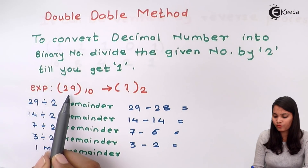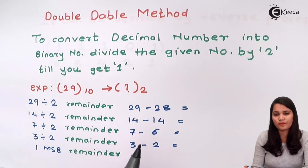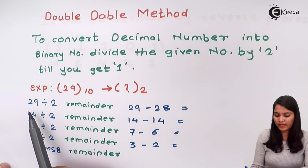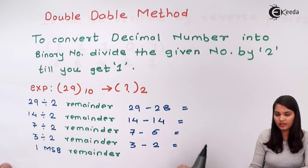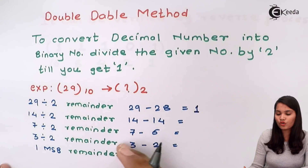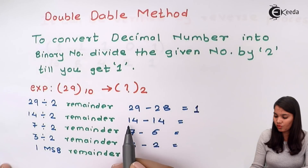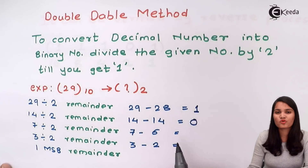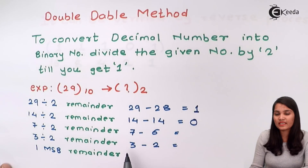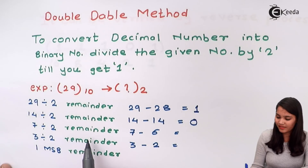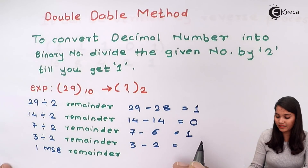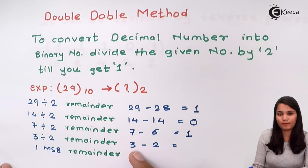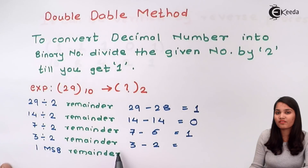We have taken an example of 29. We have to convert the decimal number 29 into the binary number. We just have to divide the number until we get the quotient as 1. If we divide 29 by 2, we get the quotient as 14 and the remainder as 1. Again divide the quotient by 2: 14 divided by 2 gives quotient 7 and remainder 0, because two 7s are 14. Now divide 7 by 2: the remainder will be 1 and the quotient is 3. We haven't got the quotient value as 1 yet, so divide 3 by 2: the remainder is 1 and the quotient is 1.